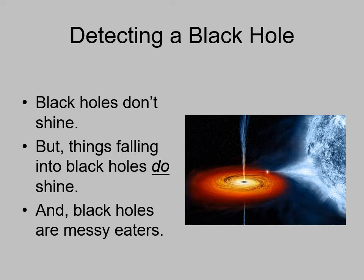How do you actually find a black hole? It's not very easy. They don't shine — they're black, and light doesn't get away from them. If you had a black hole all by itself, it would be really hard to find. Light might bend around it, but if there's nothing on the other side for light to bend past, you wouldn't even notice it. Space is black; black holes are black.